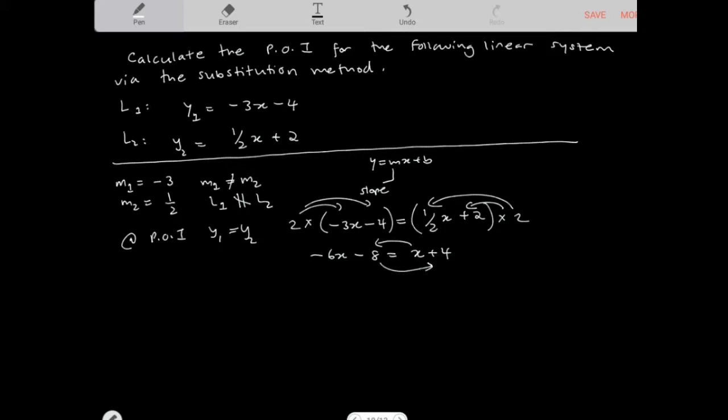And then I'm going to collect the like terms as so, and you get negative 6x minus x is equal to 4 plus 8. Then you get negative 7x is equal to 12. And x, if I divide this by negative 7, x is equal to negative 12 over 7.